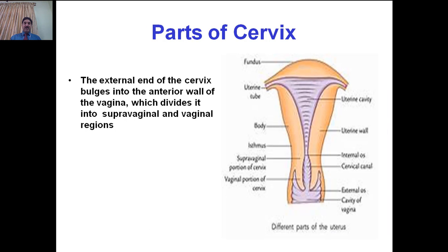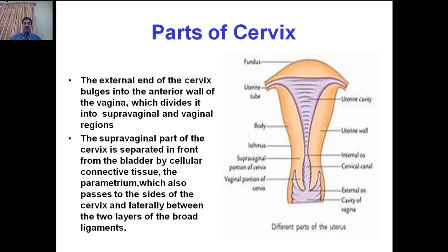During pregnancy, the isthmus forms the lower uterine segment whereas the rest of the cervix remains unaffected. The external end of the cervix bulges into the anterior wall of the vagina, dividing it into supravaginal and vaginal parts. The supravaginal part of the cervix is separated in front from the bladder by cellular connective tissue — the parametrium — which also passes to the sides of the cervix and laterally between the two layers of the broad ligament. The supravaginal part is related to the urinary bladder and the vaginal part forms the vaginal fornices.